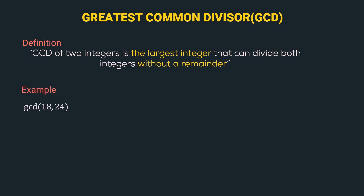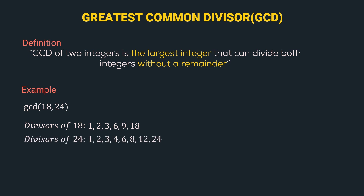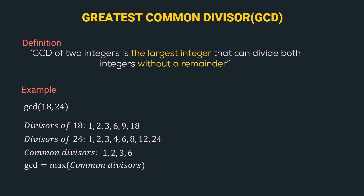Suppose we want to calculate the gcd of 18 and 24. First we find the divisors of 18, which are 1, 2, 3, 6, 9, and 18. Then we find the divisors of 24, which are 1, 2, 3, 4, 6, 8, 12, and 24. We find the common divisors: 1, 2, 3, and 6. Then we find the maximum of this list, which gives us the gcd. In this case the gcd is 6 — the largest common divisor.